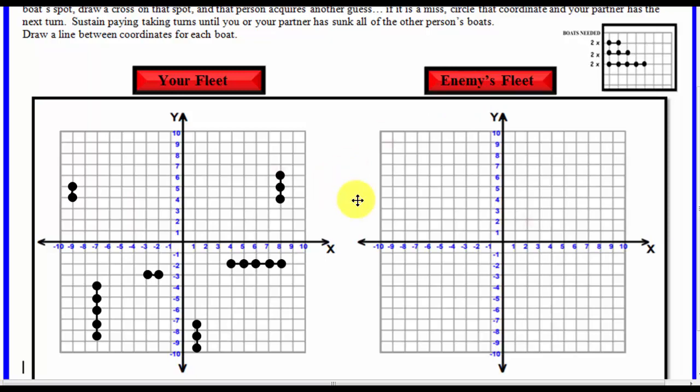So what I'm going to say is, I would like to place a hit on coordinate negative 9, 9. So when I do that, he says, it's a miss.